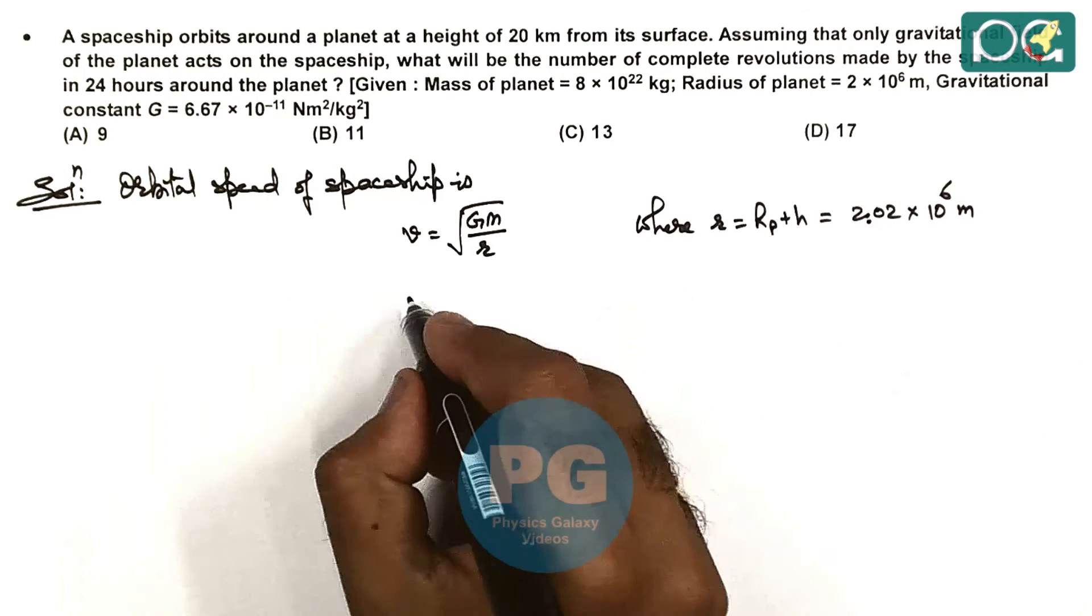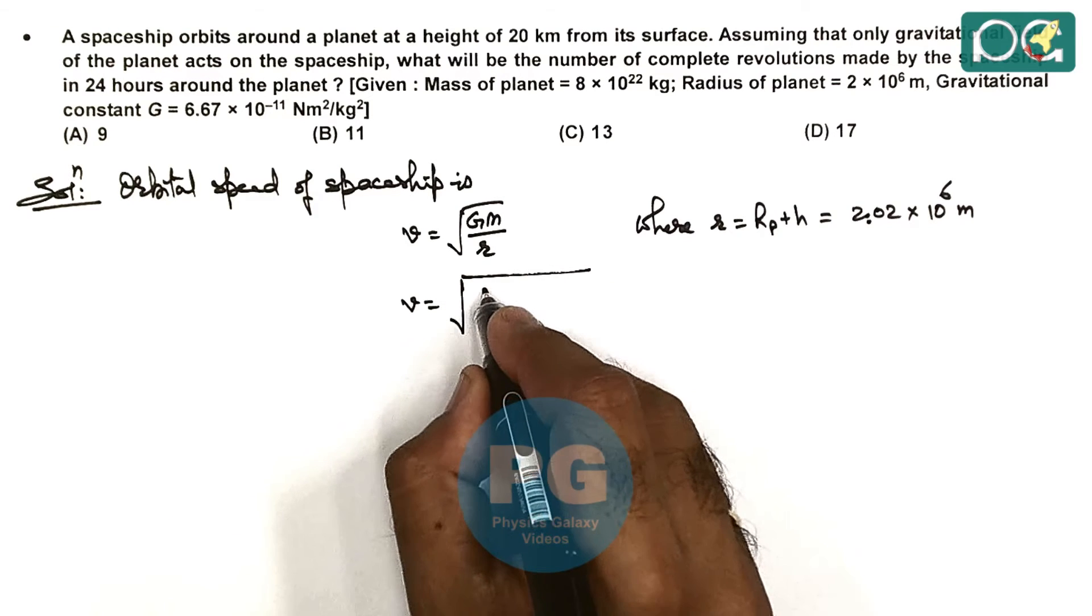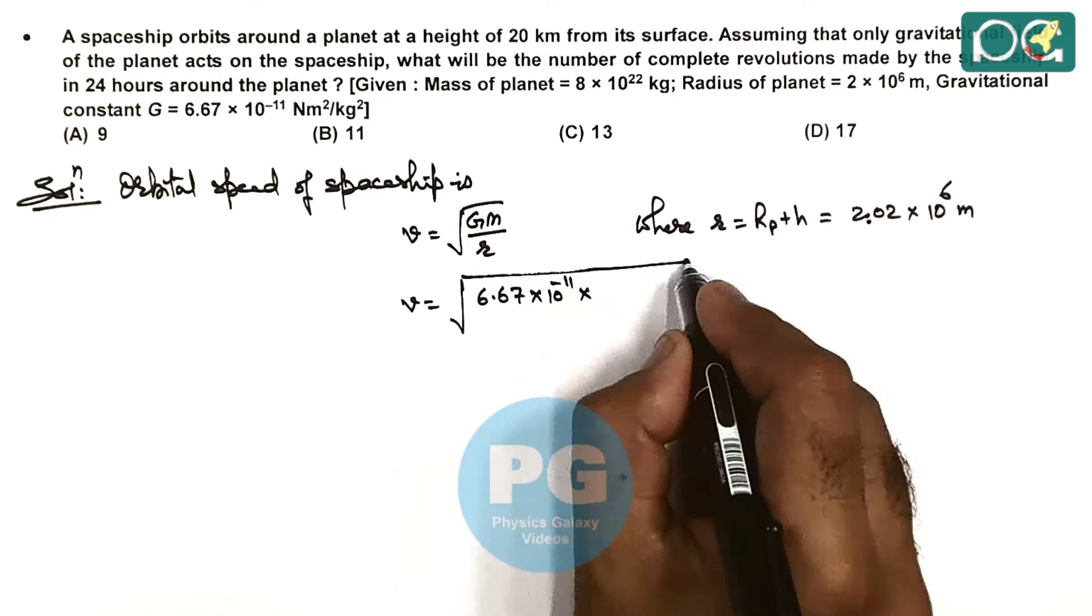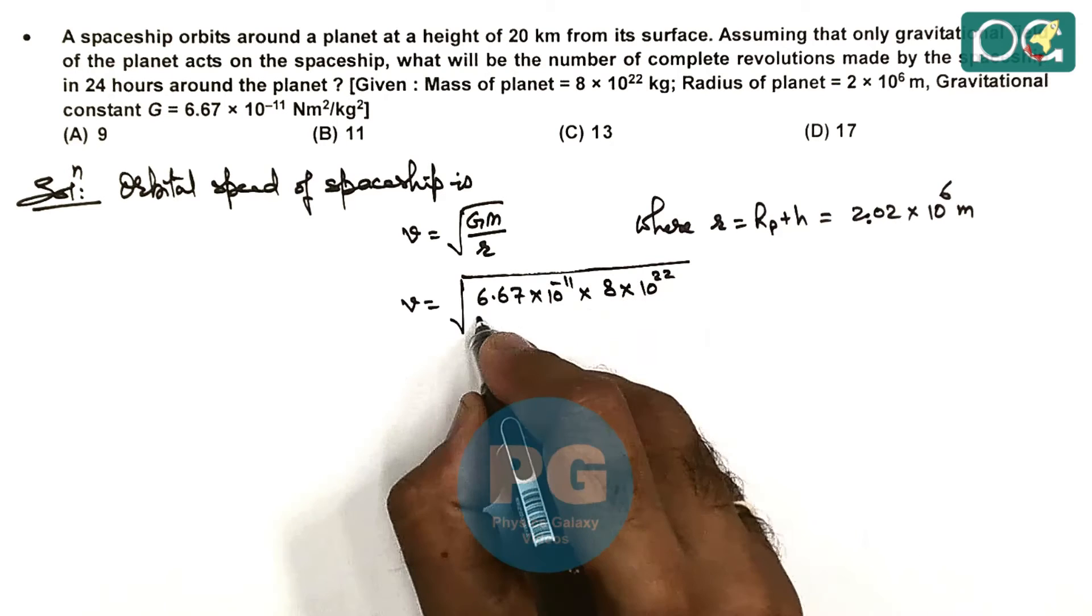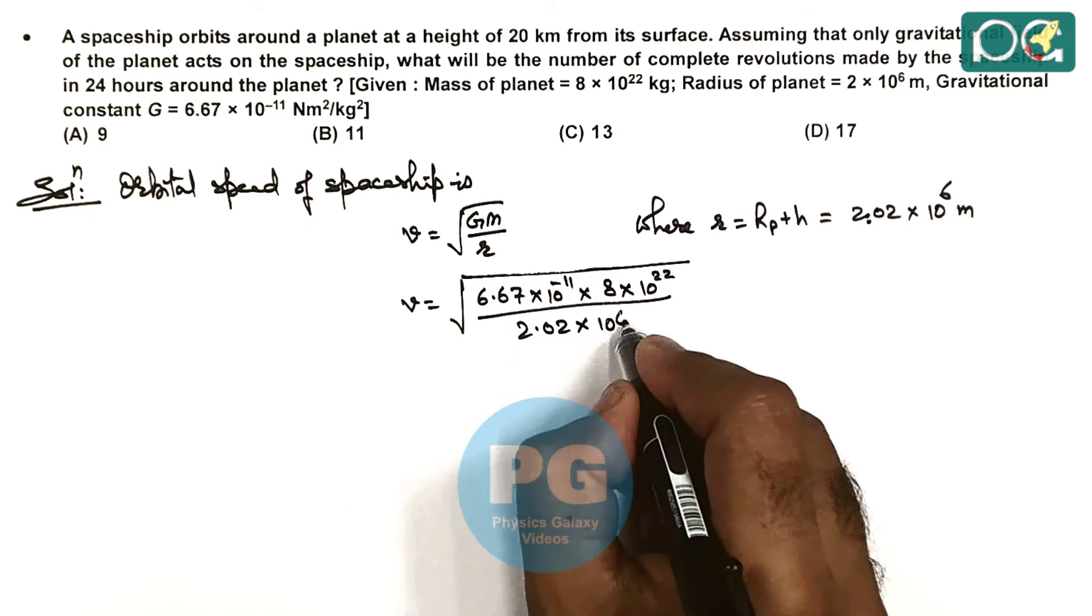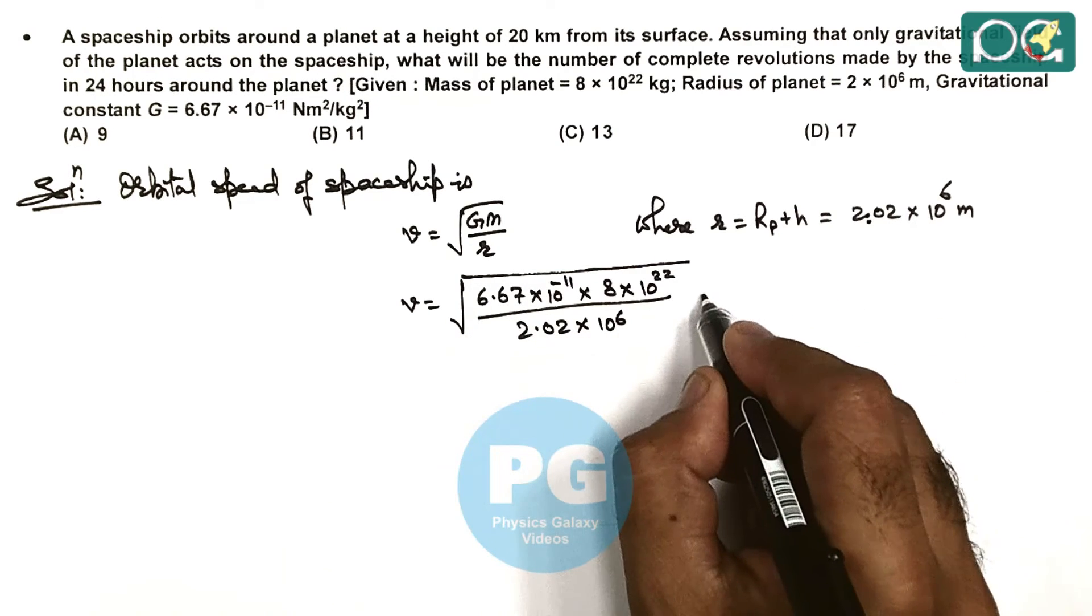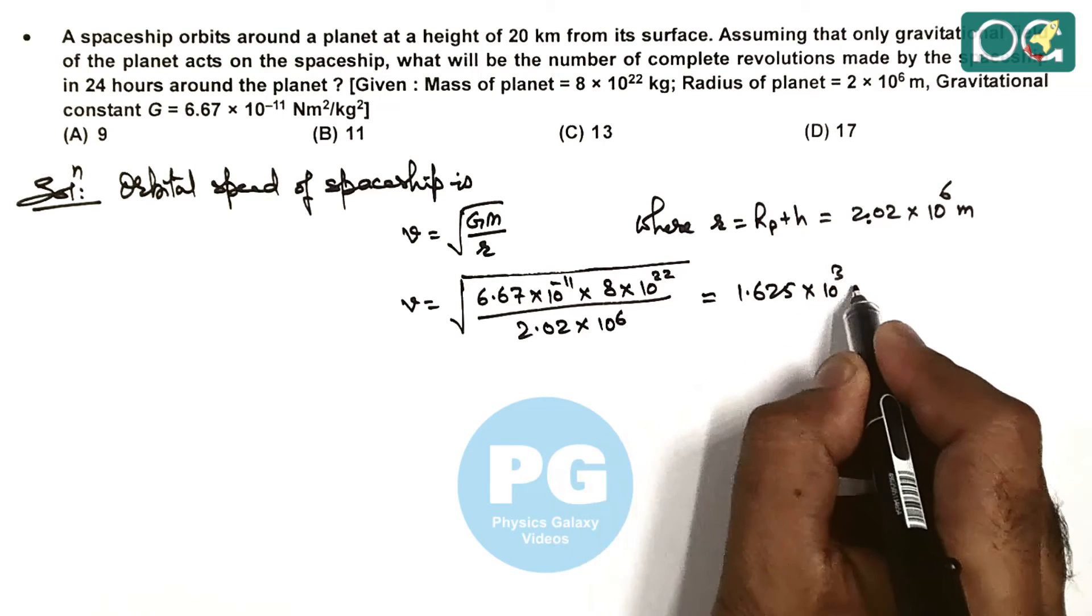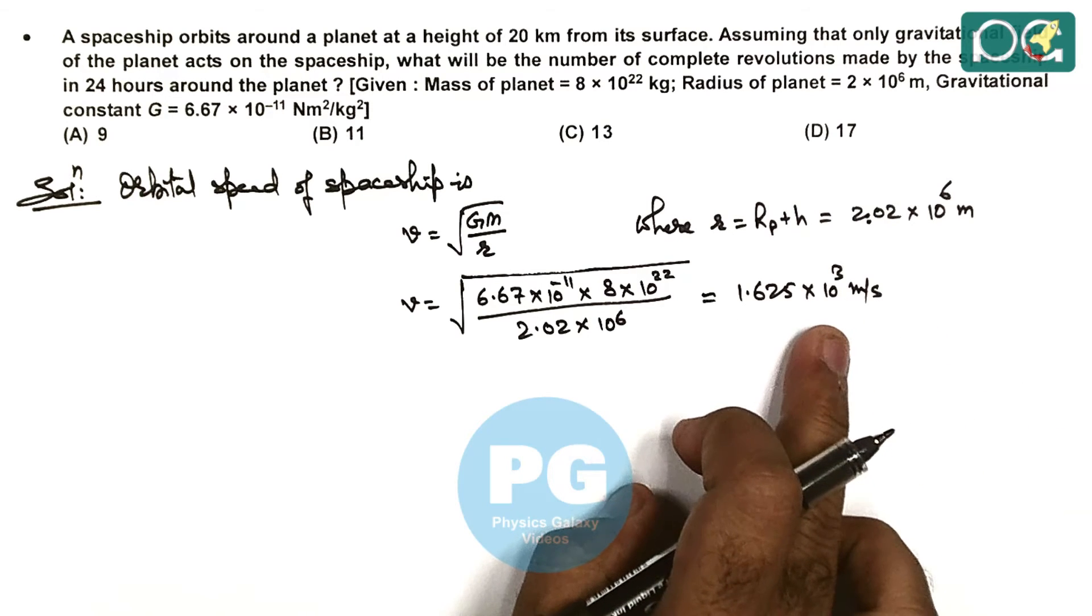Now we can calculate the speed. The value of G is given as 6.67 × 10⁻¹¹ Nm²/kg², mass of the planet is 8 × 10²² kg, and r is 2.02 × 10⁶ m. Simplifying this numerical calculation gives approximately 1.625 × 10³ meters per second as the orbital speed.